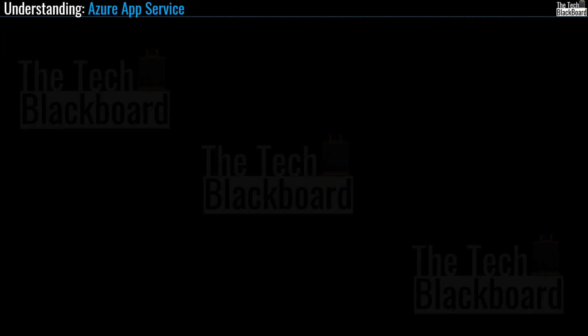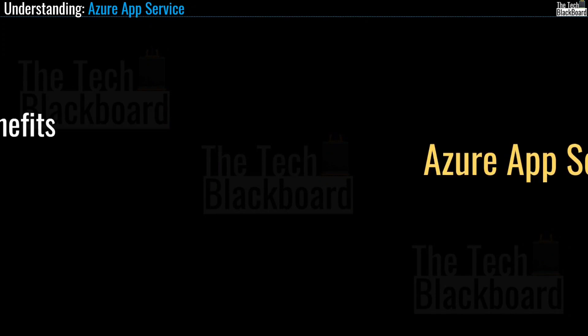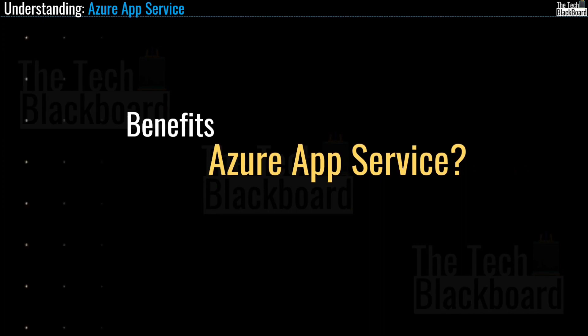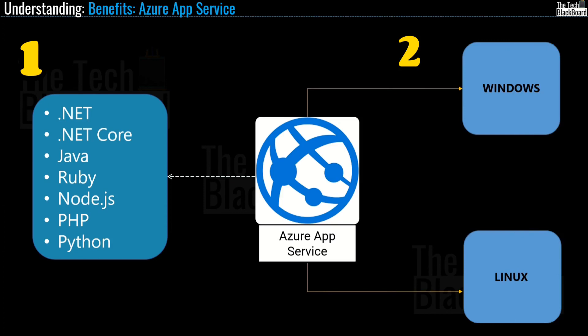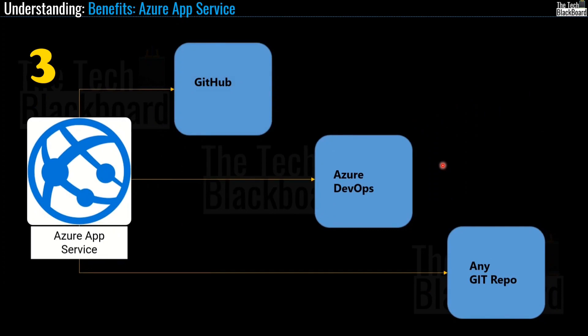Now let's look at the benefits of Azure App Service. First, it has first-class support for ASP.NET, ASP.NET Core, Java, Ruby, Node.js, PHP and Python, and you can also run PowerShell and other scripts or executables as background services. Second, applications run and scale with ease on both Windows and Linux environments. Third, there is DevOps optimization — you can set up continuous integration and deployment with Azure DevOps, GitHub, Bitbucket, Docker Hub or Azure Container Registry, making it fully compatible with all DevOps and Git repository options.